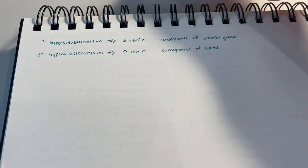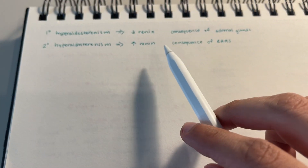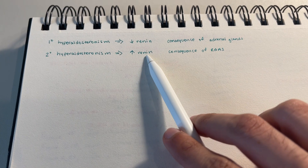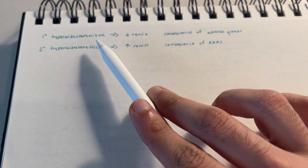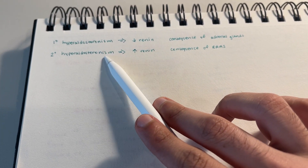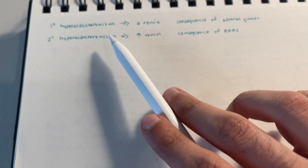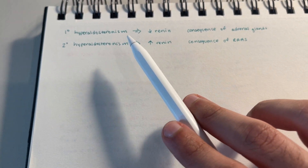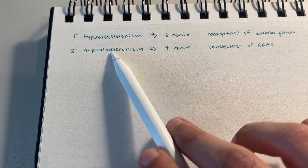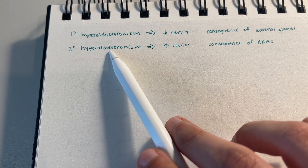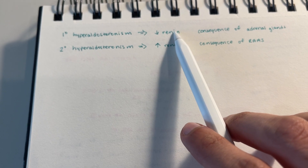Here's an interesting question. Why is there this difference in renin in primary hyperaldosteronism versus secondary hyperaldosteronism? To understand this, we first have to understand what the difference is between primary and secondary hyperaldosteronism and what the effect of aldosterone is on renin.